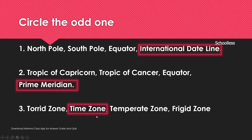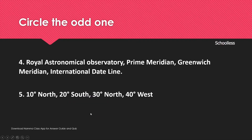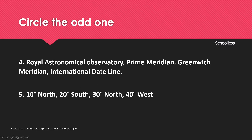Next question: Royal Astronomical Observatory, Prime Meridian, Greenwich Meridian, International Dateline — the Royal Astronomical Observatory is located in Greenwich, UK. The International Dateline is at 180 degrees longitude, so the International Dateline is the odd one here.